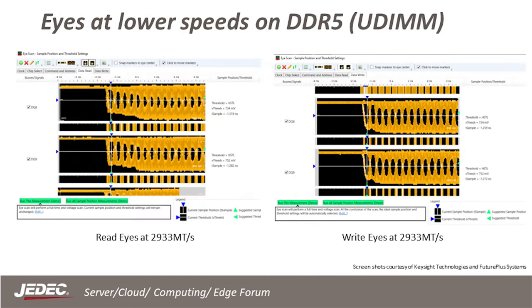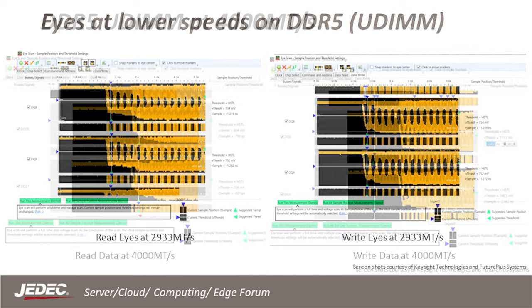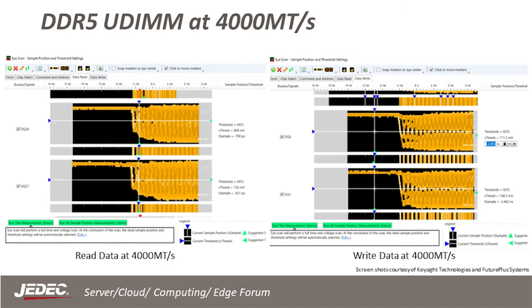Here we see eyes from a logic analyzer with a DDR5 UDIMM at speeds of 2933. This is an example of a burst 16 for read and write eyes showing the DQ data signals. You can see this is a very well-behaved system as the eyes look uniform with a good single threshold that goes through all the eyes of the burst. Now here is the same system at 4,000 megatransfers per second — the eyes are closed, certainly on the read, and thus the bit error rate would be high when latching this data.